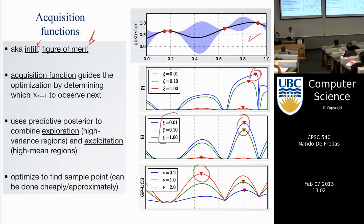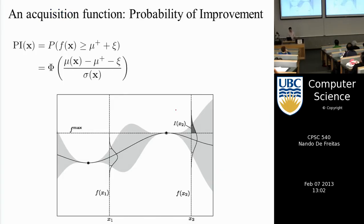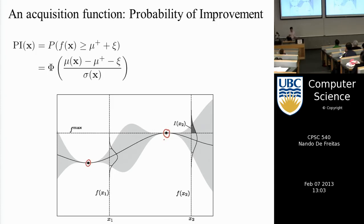Each is parameterized by a parameter. The first is called probability of improvement. We've sampled the function at two points; I fit the GP to those two points. What I'm showing is the mean of the GP, the mean plus the variance, and the mean minus the variance — confidence intervals low near data, high away from data.